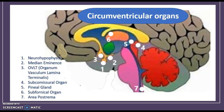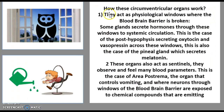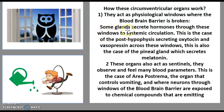These circumventricular organs have two main functions. The first is that they access physiological windows that open and close — that is how the blood-brain barrier is broken. Some of them — not all seven — are secretory, meaning they secrete hormones through these windows and release them to the systemic circulation.